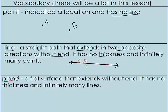Planes — what's a plane? A plane is a flat surface that extends without end. It has no thickness and infinitely many lines.